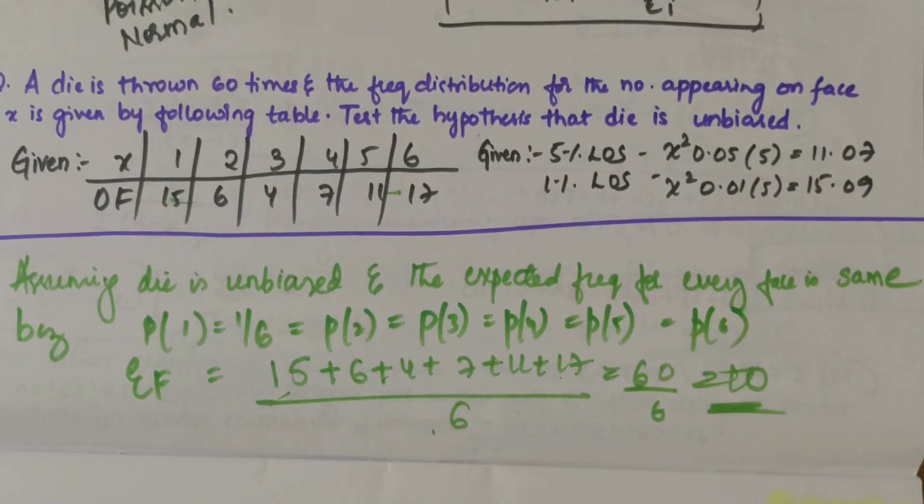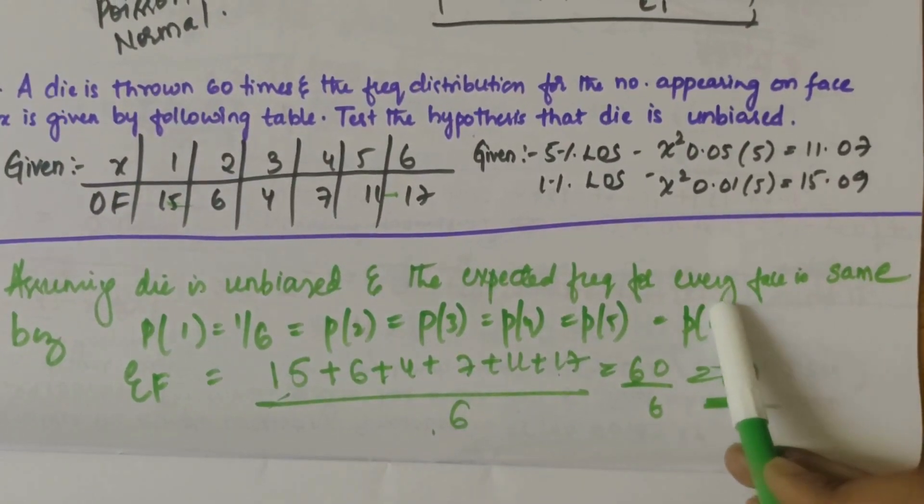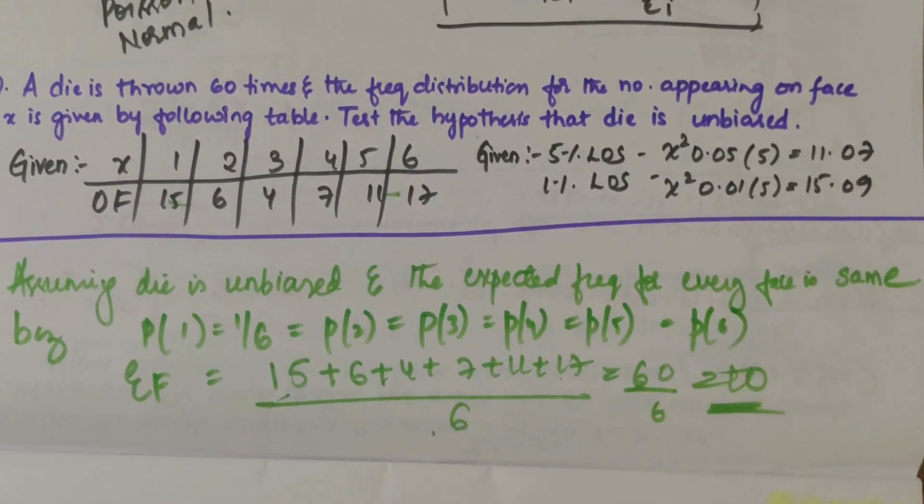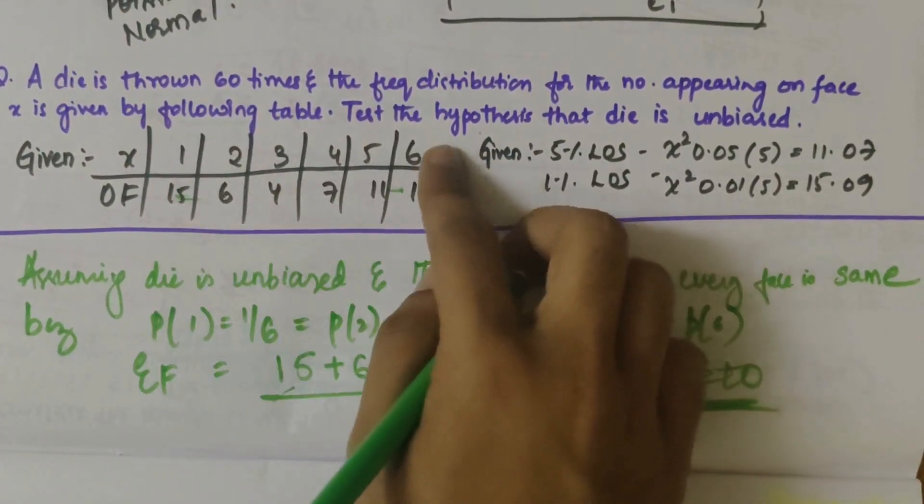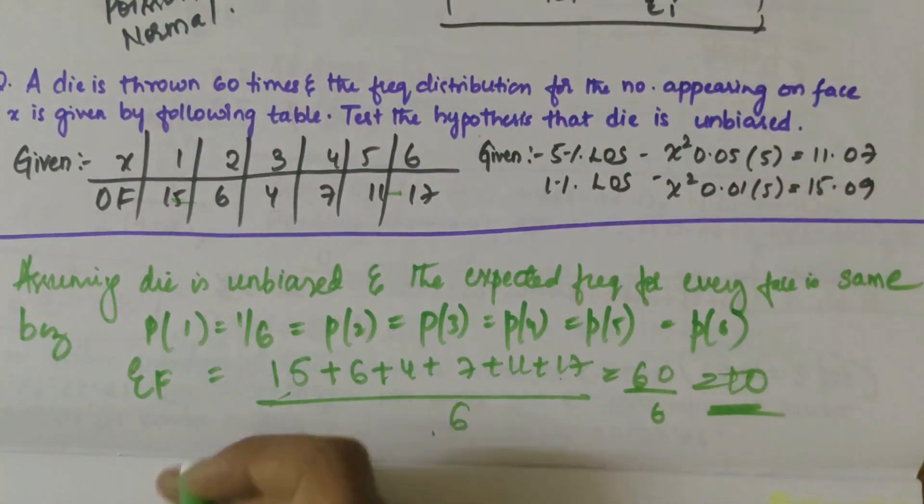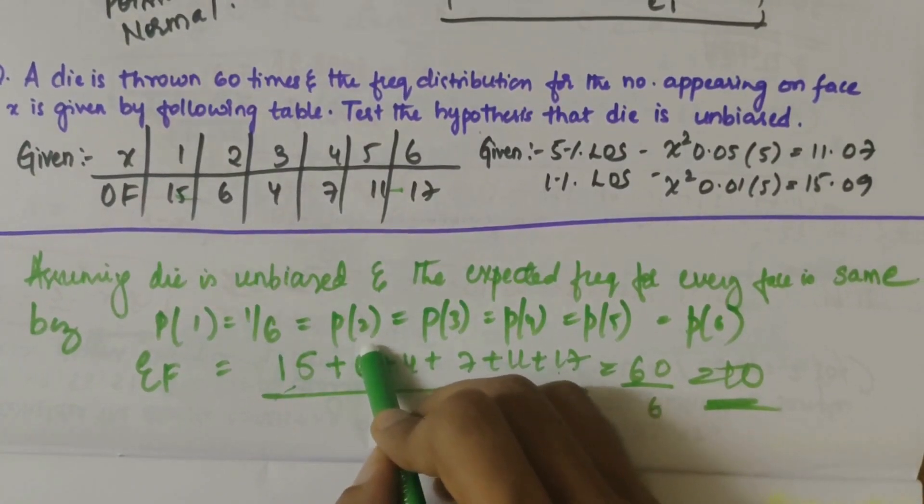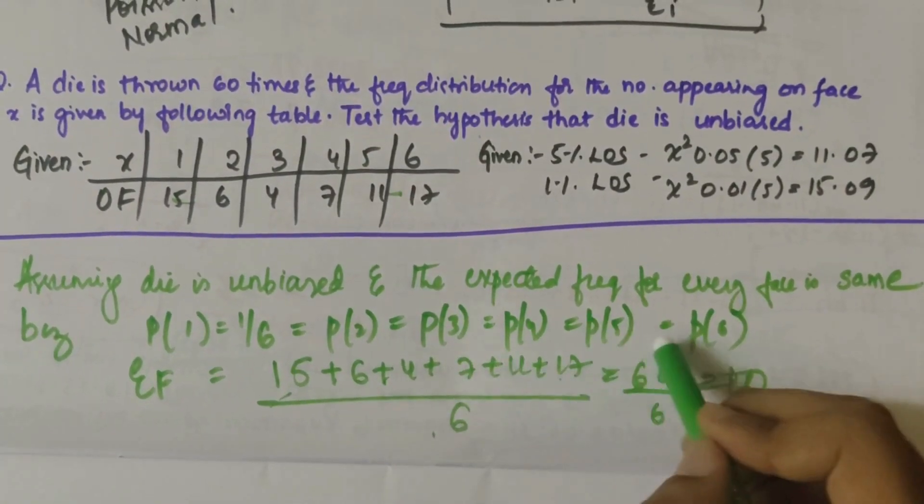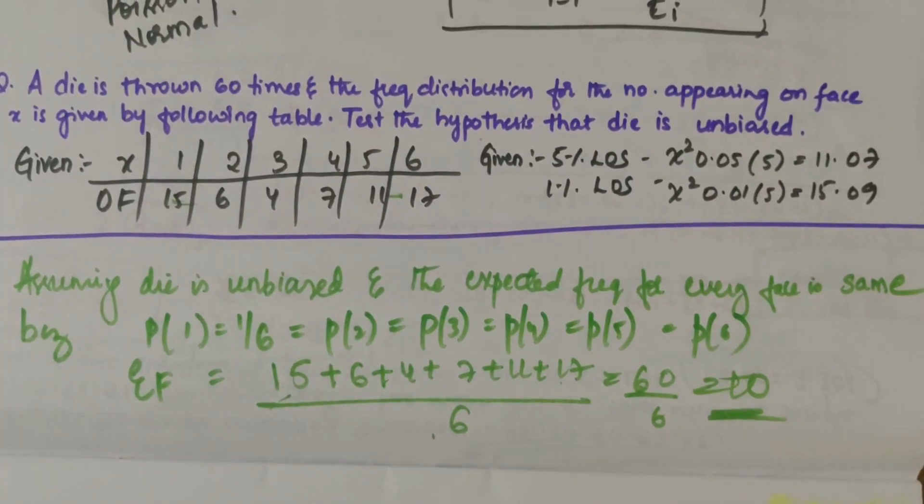Let's start solving the question. Firstly, we have to assume that the die is unbiased and the expected frequency for each face is the same, because the probability of getting one face out of six faces is same for all the sides. So it can be written as p of 1 equals 1 by 6 equals probability of getting 2 or 3 or 4 or 5 or 6.